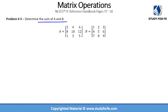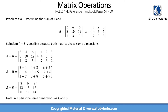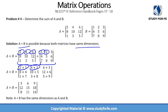The next problem asks us to determine the sum of two matrices A and B. We can calculate the sum because both matrices have the same dimensions. When doing A plus B, we add the respective elements together: the first entry of the first row of A with the first entry of the first row of B, the second entries together, and so on. The resulting matrix A plus B has the same dimensions as A and B, which is always the case with addition and subtraction.